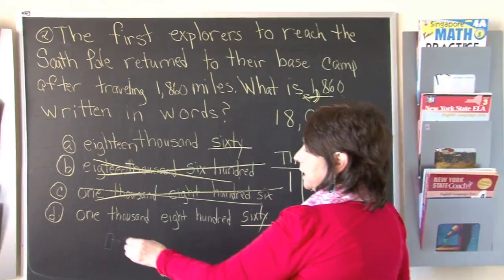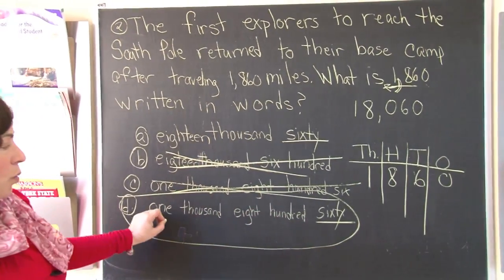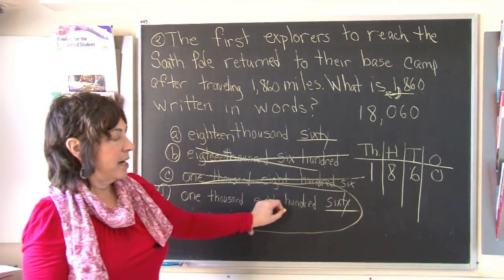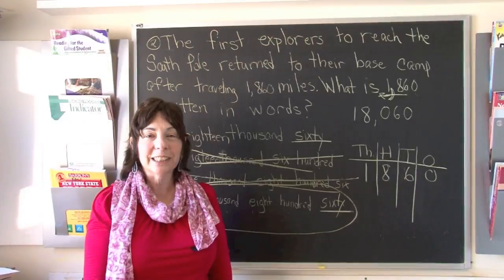So the answer is D: 1,860. That's how you do it, boys and girls.